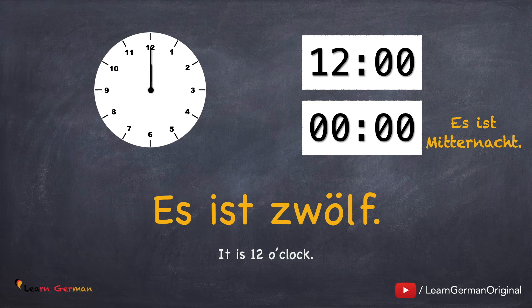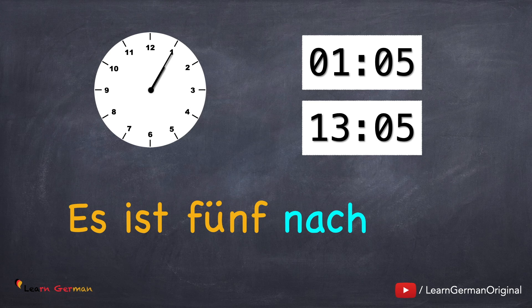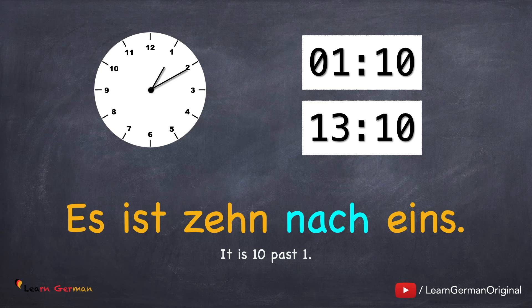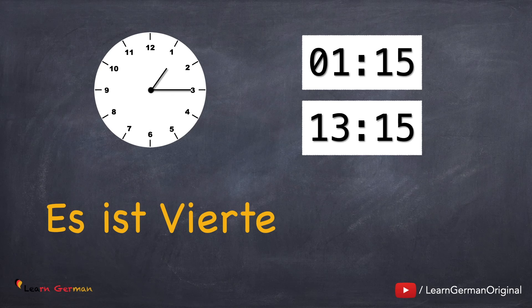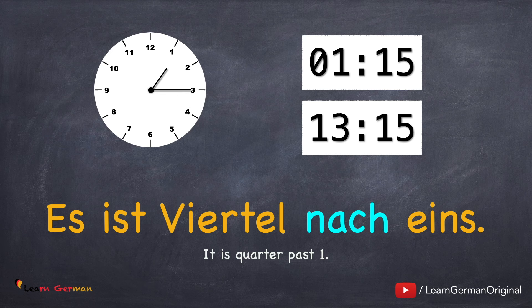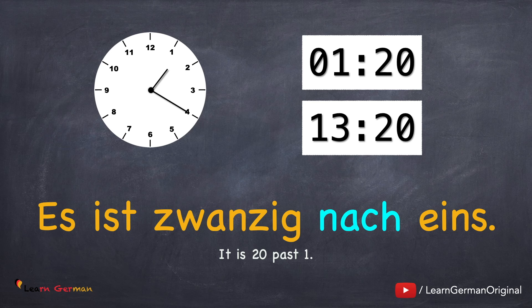Now let's do time with hours and minutes. Es ist fünf nach eins. Don't forget to repeat. Es ist zehn nach eins. Es ist viertel nach eins. Viertel here represents a quarter of an hour. Es ist zwanzig nach eins. As you must have noticed, the word nach means after.